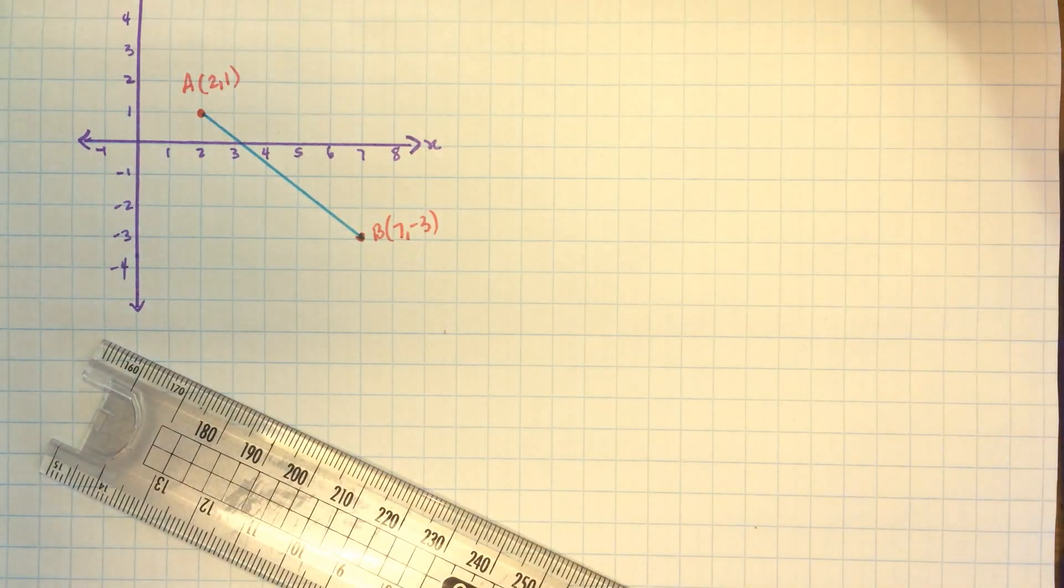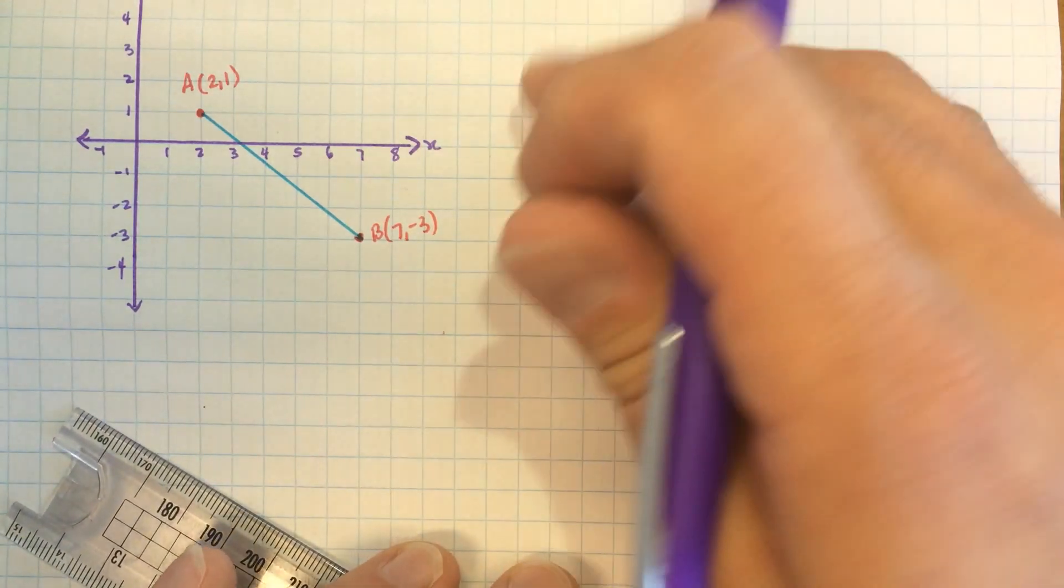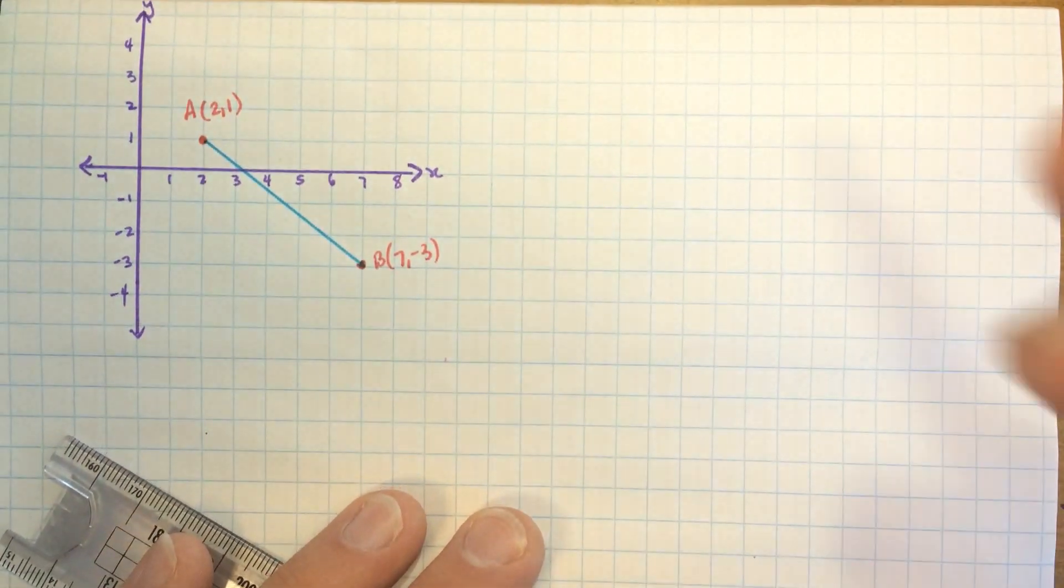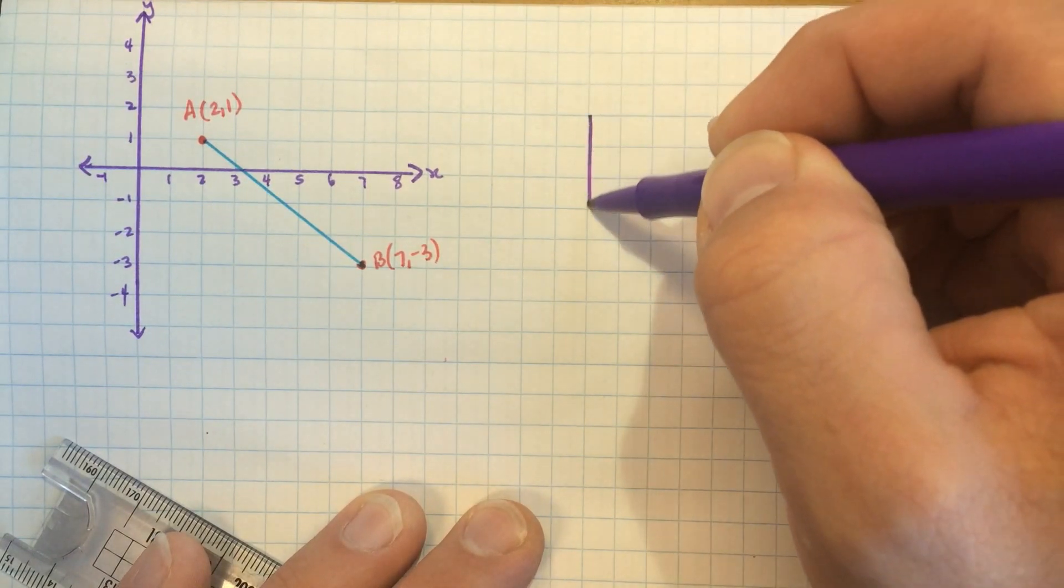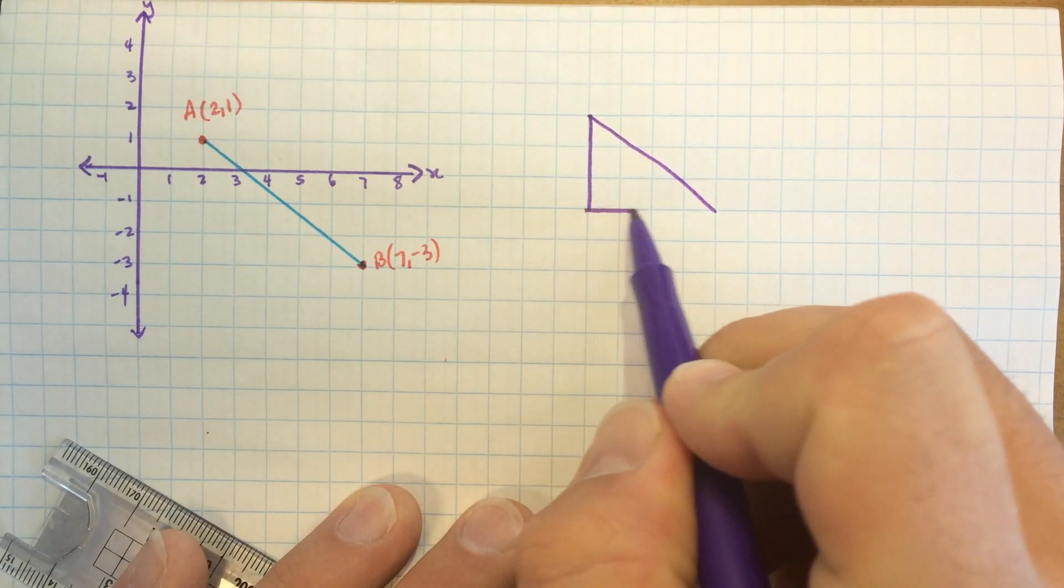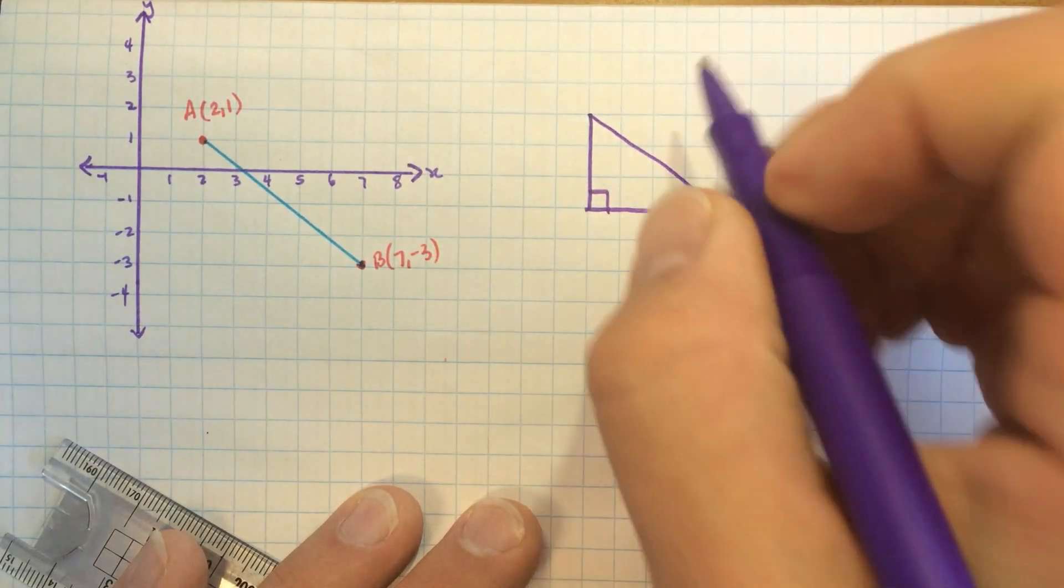So how are we going to find this? Well, we're going to think back to a little bit of math that we learned many years ago, the Pythagorean theorem. The Pythagorean theorem worked like this. If you had a triangle like this, and you knew the lengths of the two short sides, you could use it to find the length of the long side.